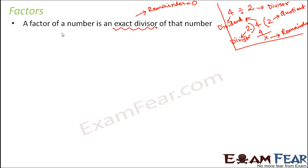Let us look at a few examples, starting with smaller numbers. Let's start with 1. Which number is an exact divisor of 1? That would be 1, because 1 × 1 = 1, so the remainder is 0. Therefore 1 is an exact divisor of 1, meaning 1 is a factor of 1.